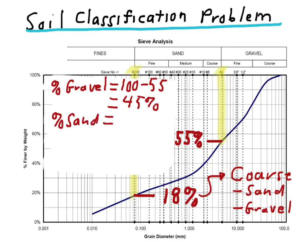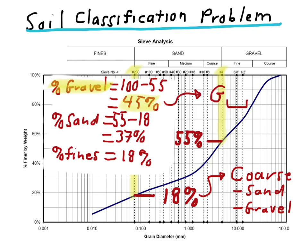We must actually calculate the percent sand. In this case, that's 55 minus 18, or 37%, and the remaining 18% is fines. So clearly, in this case, even though less than half of the sample is gravel, the majority of the coarse-grain portion of the sample is gravel. So this soil must classify out as a gravel.